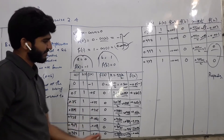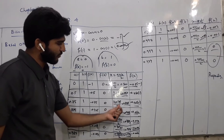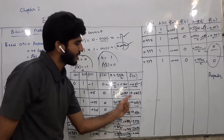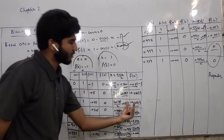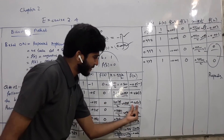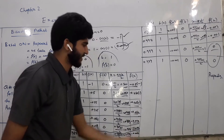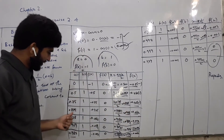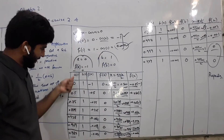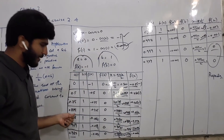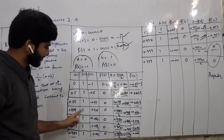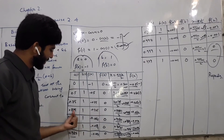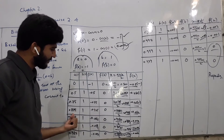باقی b اور function of b same رہیں گے. پھر ان دونوں کو plus کر کے divide کریں گے: (0.75 + 1) / 2 = 0.875. یہ function میں put کیا تو minus 0.125 آیا — negative آ رہا ہے. تو again یہ negative والا value a کی جگہ replace کریں گے، باقی positive والا same رہے گا.